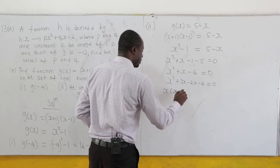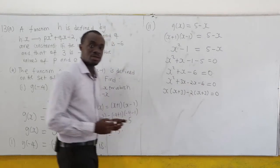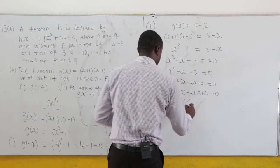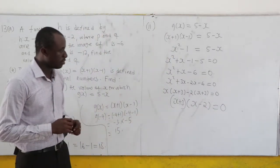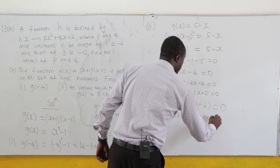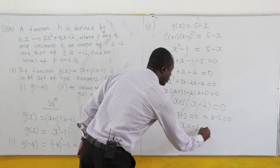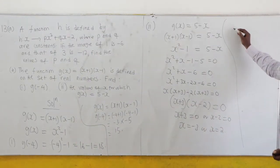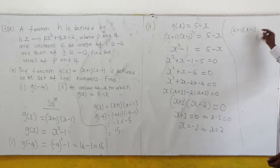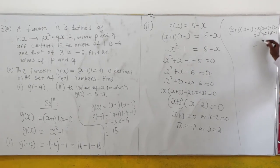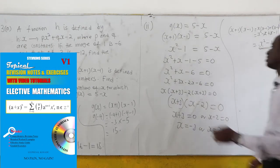Taking two terms at a time: x(x + 3) - 2(x + 3) = 0. We can see (x + 3) is common, so factorizing: (x + 3)(x - 2) = 0. Using the null factor principle: x + 3 = 0 or x - 2 = 0. So x = -3 or x = 2. That is very trivial. The expansion of (x + 1)(x - 1) gives x² - x + x - 1 = x² - 1, confirming it is the difference of two squares.